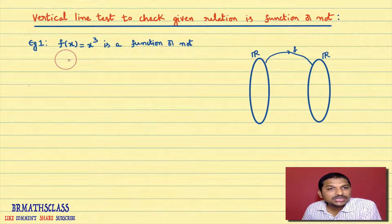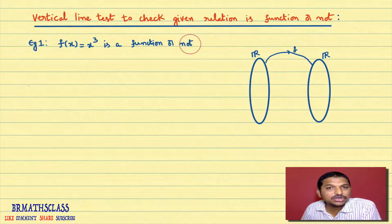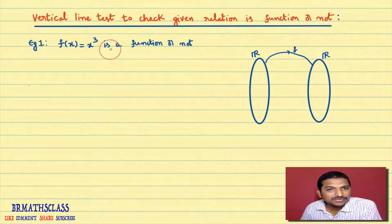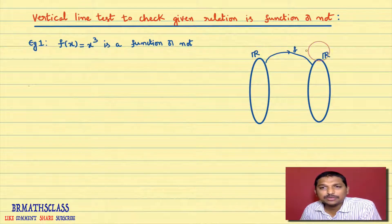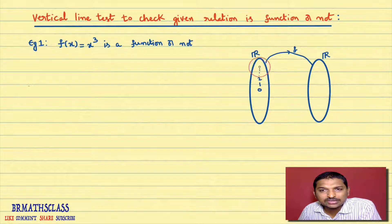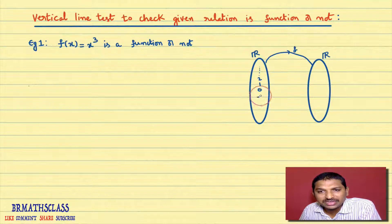Example number 1: f(x) = x³. Is this relation a function or not? First, I will explain using a mapping diagram and then move to the vertical line test. This is a relation from R to R. I'll write some numbers: 0, 1, 2, 3, and so on, and also negative numbers like minus 0.5, minus 0.9. We'll consider some of these numbers to check whether it is a function or not.